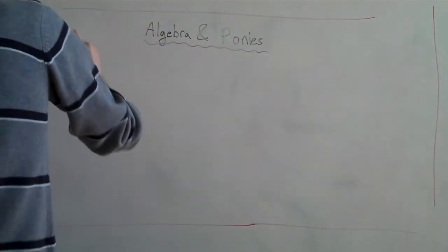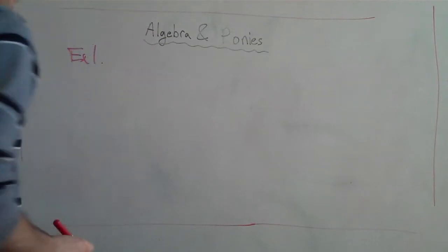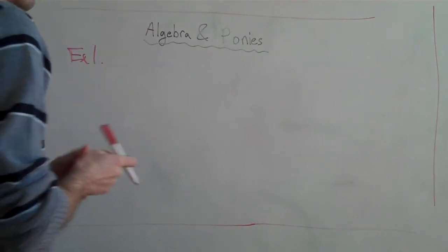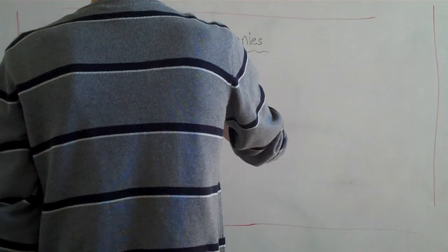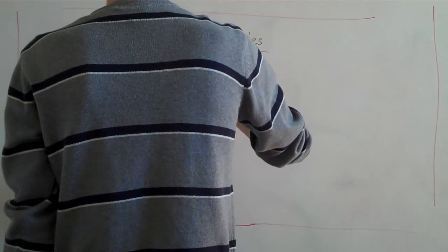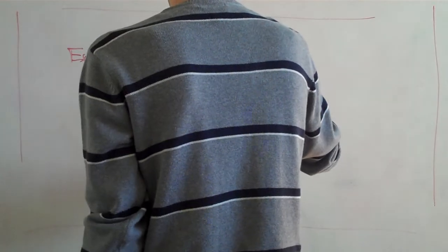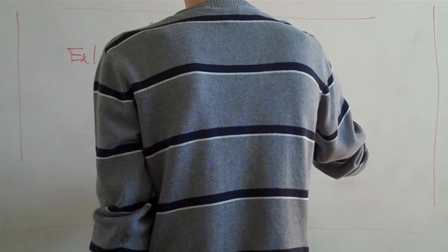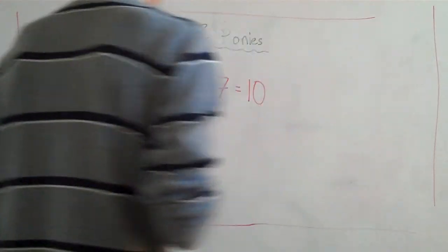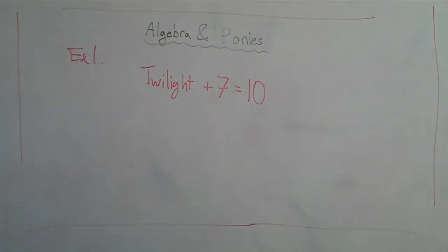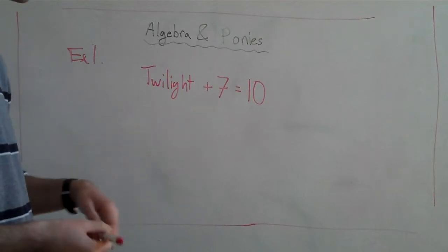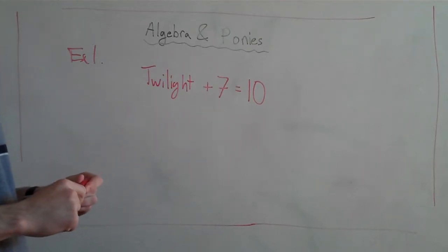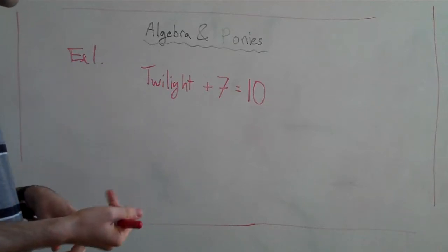Example number one. Give me another pony — Twilight. Now, last time we talked about the intuitive method, where we just use rules about math to solve this. We're going to use it with my new favorite rule: what you do to one side, you have to do to the other.